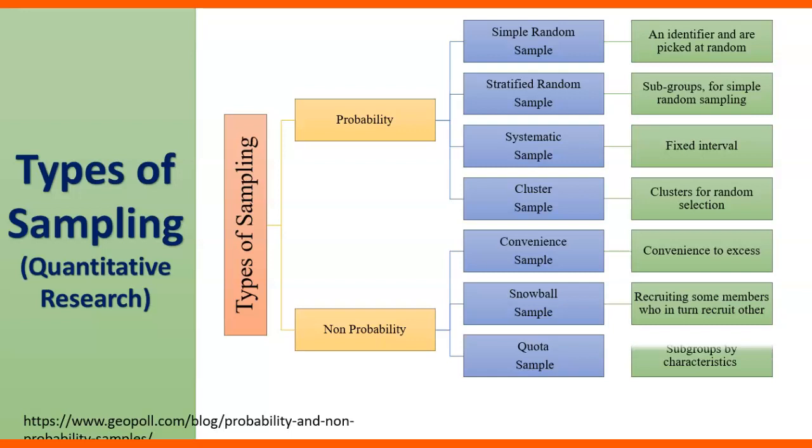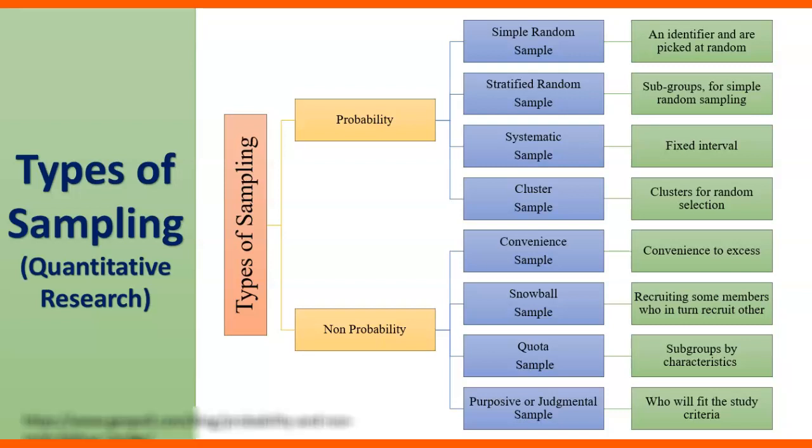Quota sample. You will divide your sampling frame or population based on subgroups having similar and identical characteristics. Next one is purposive or judgmental sample. You will see for those respondents who will fit for the study, who can give you better insight.